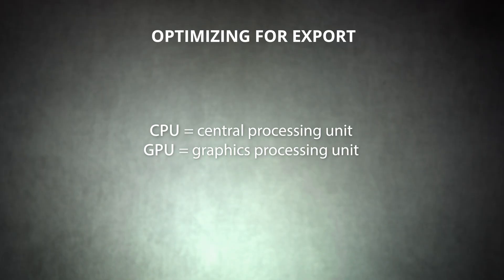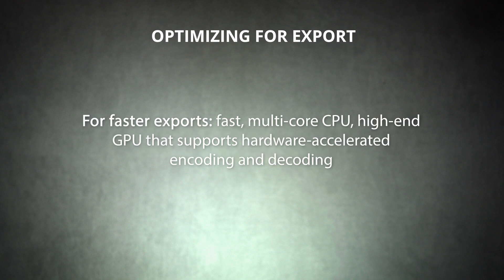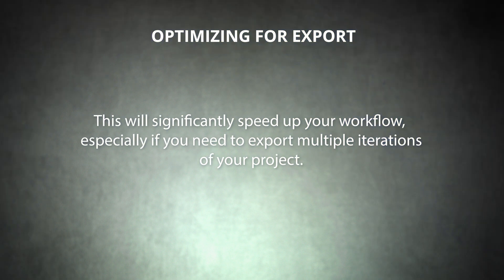Your video editing computer needs to process a lot of video and audio data in order to export your project successfully. This requires a powerful machine with high-performance components. Most important for speeding up your exporting process are the CPU and GPU. The CPU, or Central Processing Unit, executes instructions from your computer programs and processes data. The GPU, or Graphics Processing Unit, is responsible for processing data related to visual output. For faster exports, choose a fast, multi-core CPU and a high-end GPU that supports hardware-accelerated encoding and decoding. This will significantly speed up your workflow, especially if you need to export multiple iterations of your project.